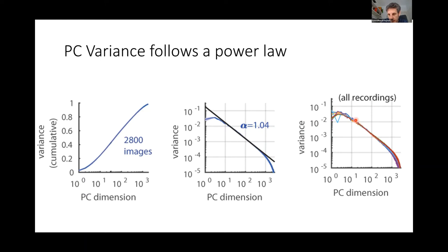If you plot the variance in the nth dimension on a log-log scale — non-cumulative — you can see that over two or three orders of magnitude it follows a power law with an exponent just above one. This is true for every one of the experiments. The variance in the nth dimension is approximately 1/n; the exponents are always just a little bit above one — 1.04, 1.09 — with slight variability between experiments but all basically the same.